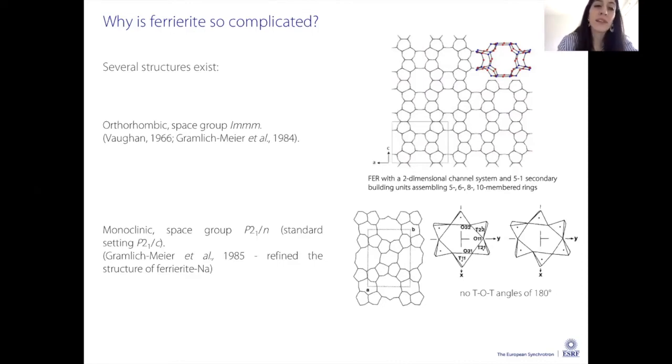There are several structures existing in literature that describe ferririte. In particular there's one orthorhombic in space group Immm and another monoclinic in group P21/n. Basically there are silicon oxygen tetrahedra, and whether these TOT angles are 180 degrees or not - when these angles are not 180 degrees you see that mirror planes disappear and the symmetry of these materials decreases.